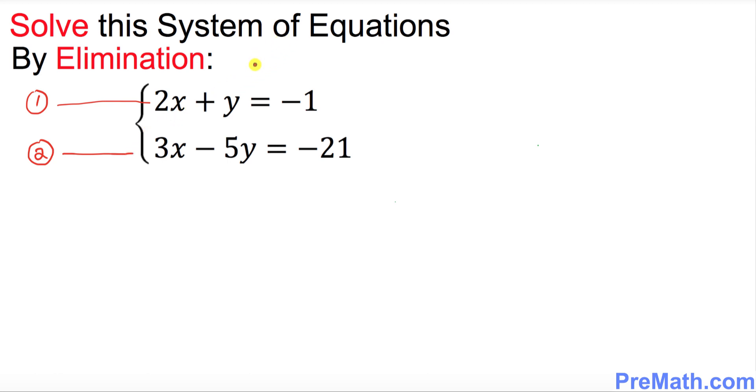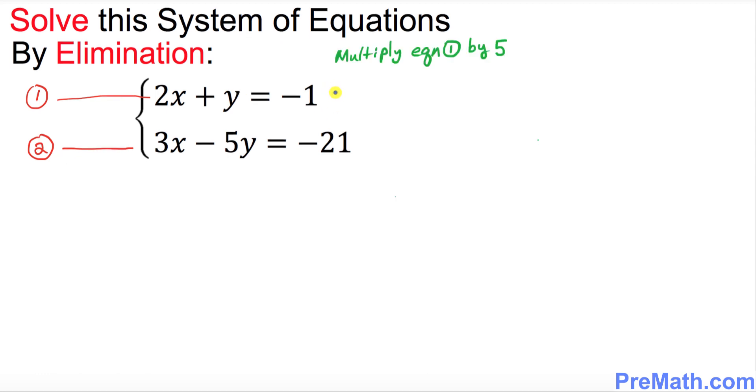The next step we want to do is we want to multiply equation one by five on both sides. So let's go ahead and multiply the first equation, equation number one by five.